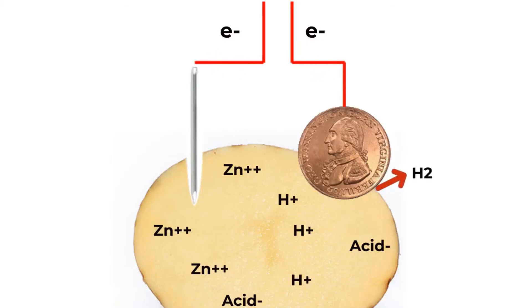At the zinc electrode, positively charged hydrogen atoms and electrons are produced from an oxidation reaction with the potato. The electrons travel along the zinc nail through the wires to the copper coin.